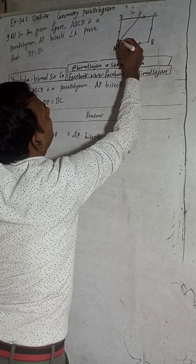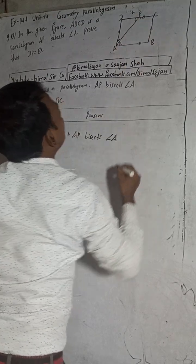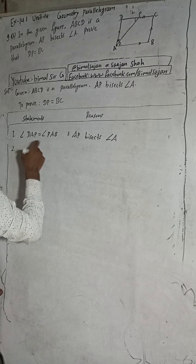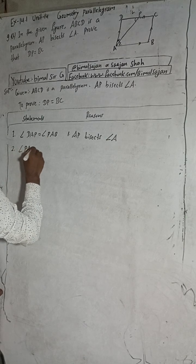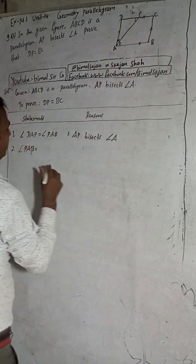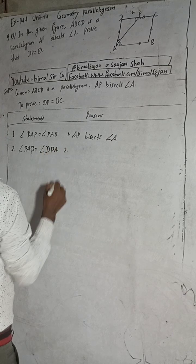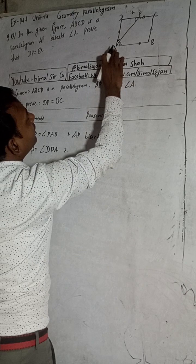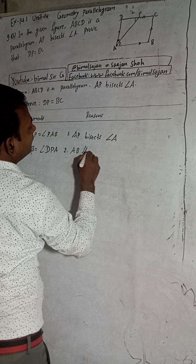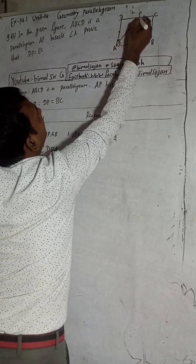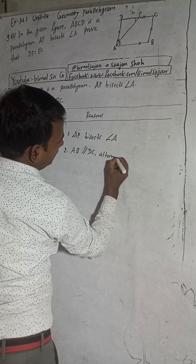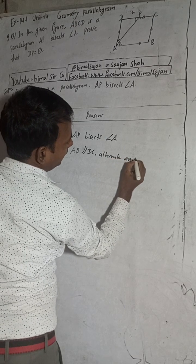Now, for statement number 2: angle PAB is equal to angle DPA. The reason for this is alternate angles, because AB is parallel to DC. Since AB is parallel and DC is parallel, alternate angles are equal.